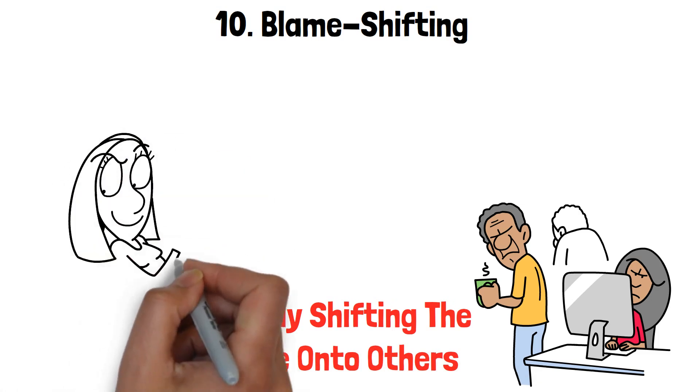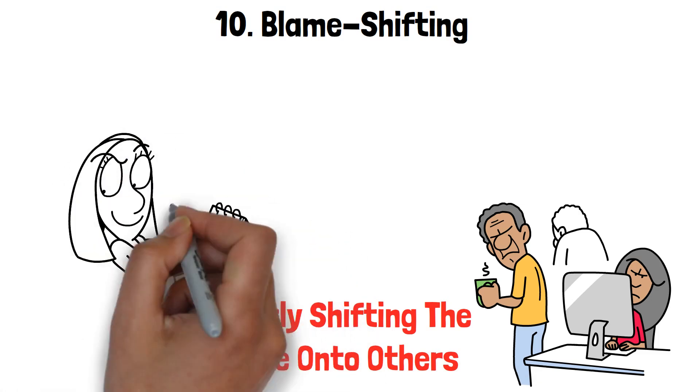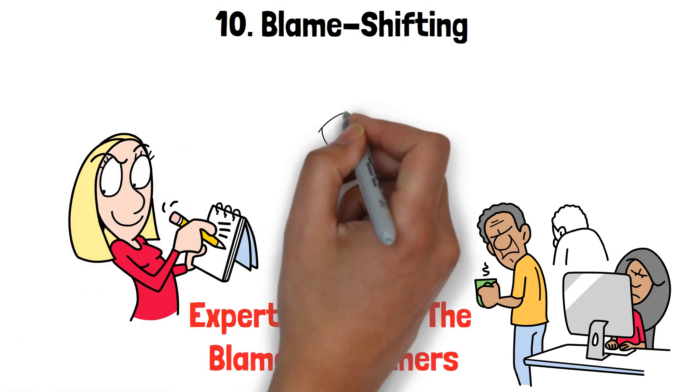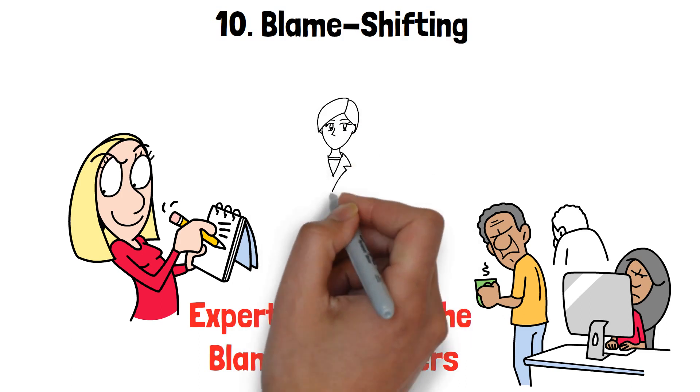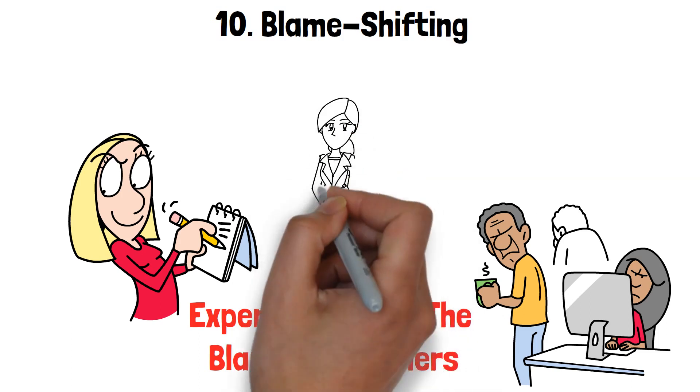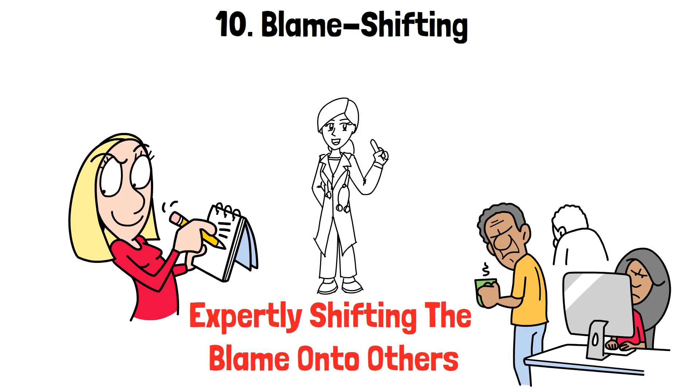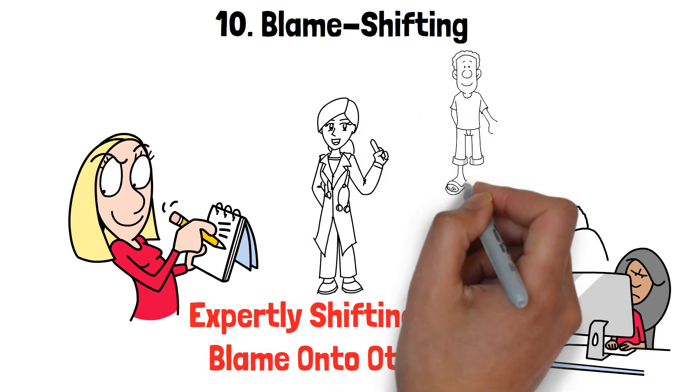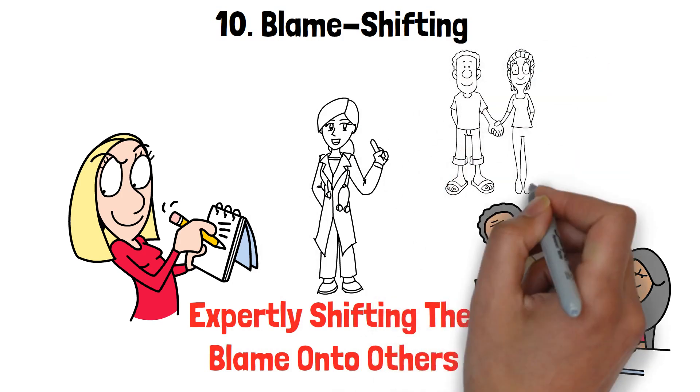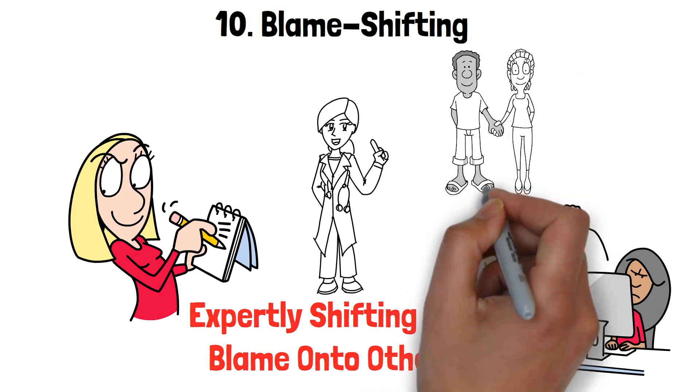Whether it's a minor disagreement or a major issue, she's skilled at making it seem like it's someone else's fault. This leaves you feeling bewildered and questioning your own judgment. It's like trying to catch smoke in your hands, frustrating and ultimately futile. Recognizing this tendency can be a crucial step in maintaining your own sanity and clarity in the relationship.